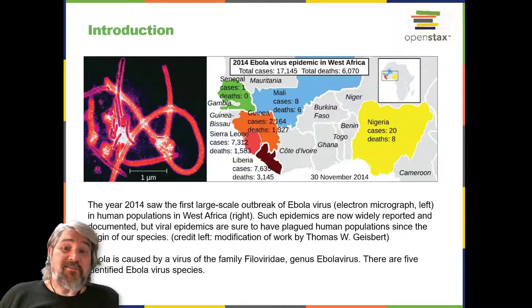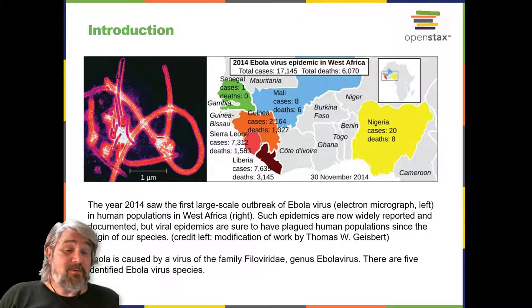This included the case of an infected man who traveled to the United States, sparking fears the epidemic might spread beyond Africa. Until the late 1930s and the advent of the electron microscope, no one had seen a virus. Yet treatments for preventing or curing viral infections were used and developed long before that.